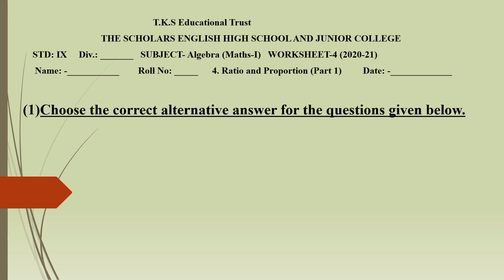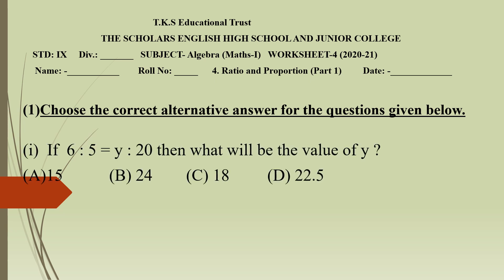Choose the correct alternative answer for the questions given below. The first question is: if 6 is to 5 equals y is to 20, then what will be the value of y? Option A is 15, option B is 24, option C is 18, and option D is 22.5. Let's solve it.